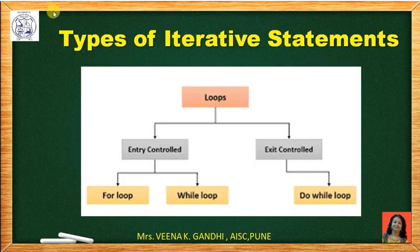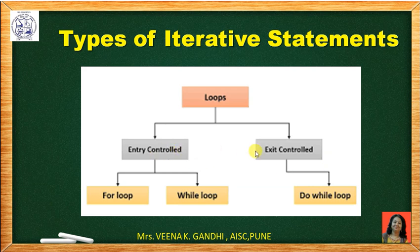Now, types of iterative statements. There are two types of iterative statements: entry control and exit control. They are also known as top-tested loop or bottom-tested loop. Entry control loop is divided into two parts: for loop and while loop. Exit control loop consists of the do-while loop.